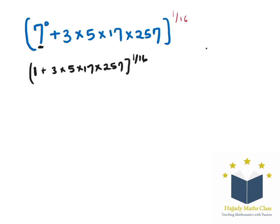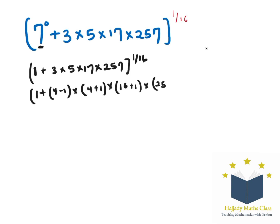I'm going to use an approach here and I want you to please concentrate on this. Here I'm having 1 plus 3 can be written as 4 minus 1, which is the same thing as 3. My 5 can be written as 4 plus 1. Multiply by 17 can be written as 16 plus 1, and then 257 can be written as 256 plus 1, all to the power of 1 over 16.